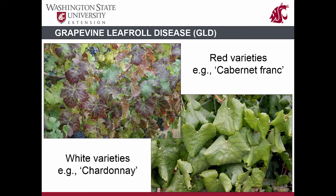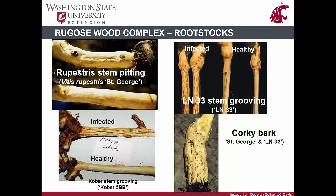Grapevine leaf roll disease is considered one of the more widespread diseases of wine grapes — indeed, one of the most complex diseases known to impact plants. It has been suggested that grapevine leaf roll disease accounts for most of the grape losses worldwide due to grapevine viruses. It also reduces fruit quality, and is recognized in the USA as a major problem for wine grape production.